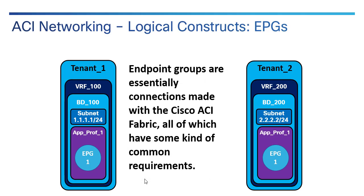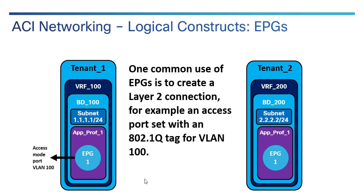Endpoint groups are essentially connections made inside the Cisco ACI fabric. It can be a physical port, a virtual port in VMware or Hyper-V, or a subnet range outside of the Cisco ACI fabric. Typically you group these together based on some common requirements, not unlike when you assign interfaces to a VDC. One very common use of EPGs is to create a layer 2 connection — for example, an access port set with an 802.1Q tag for VLAN 100, where the outside world would see VLAN 100 coming from the port on the switch and would also be sending tagged traffic back into it.